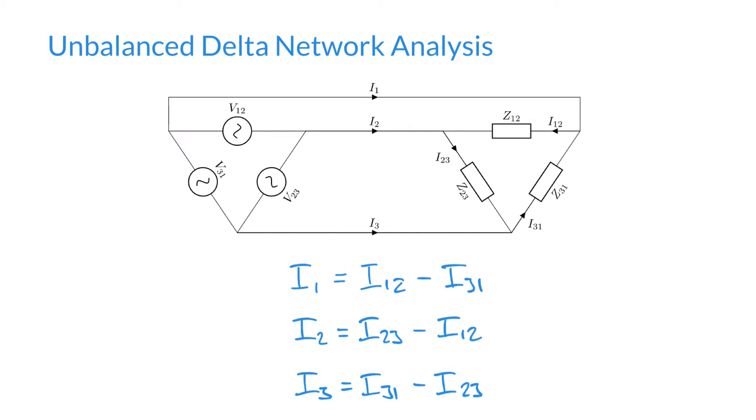We're going to jump straight in with an example of an unbalanced delta network. The reason it's unbalanced in this case is we're going to assume that these three impedances that are our delta connected impedances are not equal.